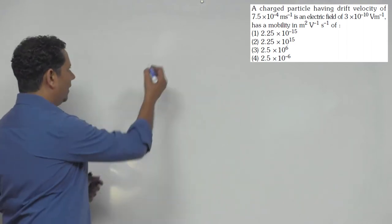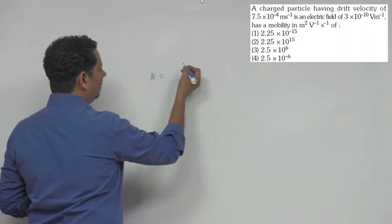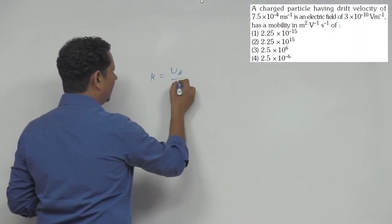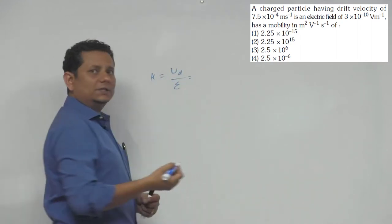This is a simple problem. Mobility, as you know, will be equal to drift velocity divided by electric field. So drift velocity is given to us.